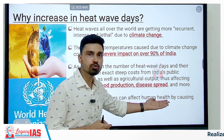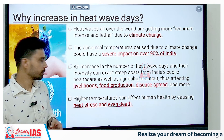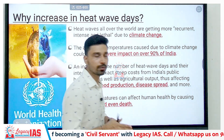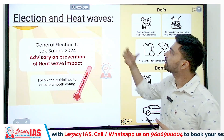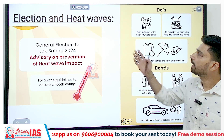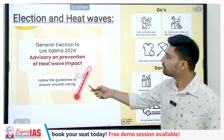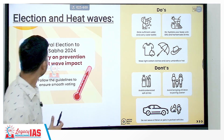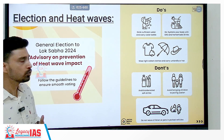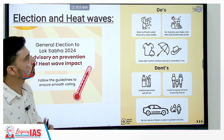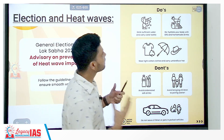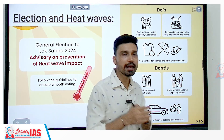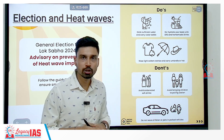Disease spread can also happen and many more sectors can be impacted. Higher temperatures can affect human health by causing heat stress and even death. Regarding the upcoming elections in India, guidelines released by the social media cell of the Election Commission of India note that general elections to Lok Sabha are taking place soon. To ensure smooth voting, the first guideline is to drink sufficient water to prevent dehydration and always carry a water bottle.